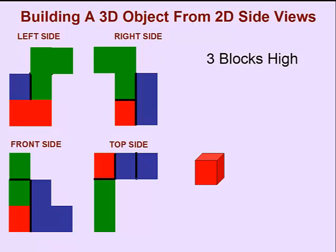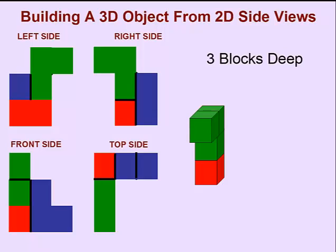looking from the left side, there must be two green blocks. We know that the object is three blocks deep, judging from the top side, left side, and right side. We know that there must be a green block in front of our other green block.